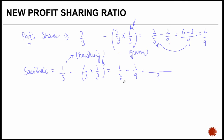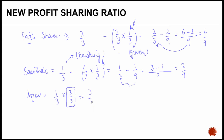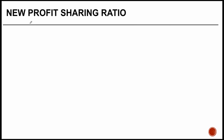Taking nine as the least common multiple, one upon three becomes three upon nine, minus one upon nine gives two upon nine. Arjav's share is one upon three, which is three upon nine. So the new profit sharing ratio between Puri, Sarthak, and Arjav is four upon nine, two upon nine, and three upon nine — or in other words, four is to two is to three.